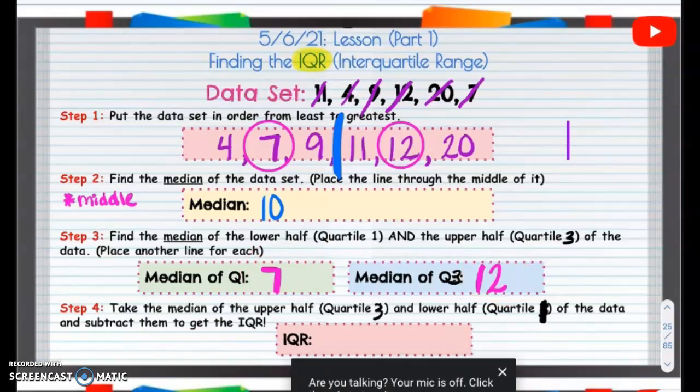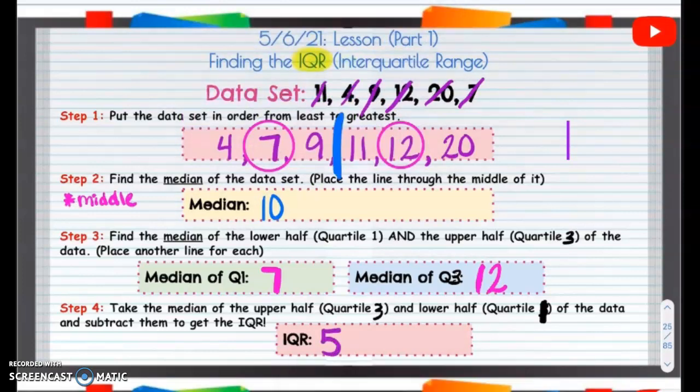So our interquartile range is going to be 5. Interquartile range is 5. I know that was a little bit tricky. Don't stress too much about it. We're going to look a little bit more into this. Let's go ahead on to, actually, I'm going to make a separate video for that next slide. All right, great job.